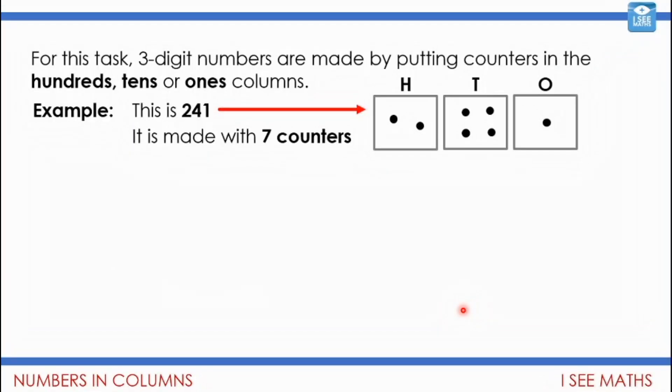So we're going to build on this understanding now. So for this task, three-digit numbers are made by putting counters in the hundreds, tens, or ones columns, just like we've seen, really. So here, in this example, this is 241, the way that I've made this number, and it's been made with seven counters. So this is an example for us.